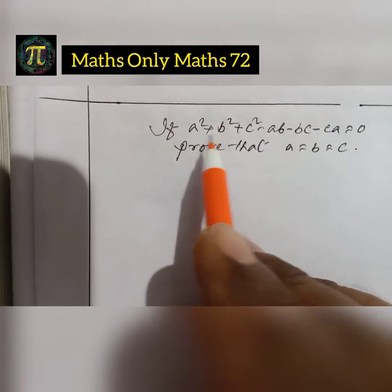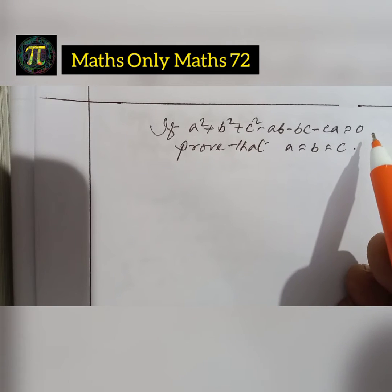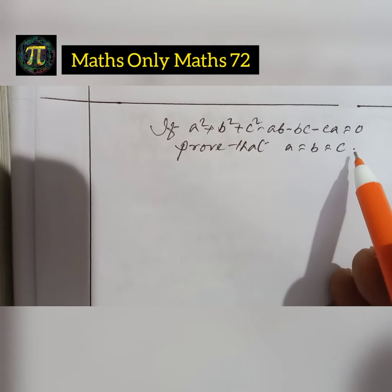The question is, if a²+b²+c²-ab-bc-ca=0, prove that a=b=c.